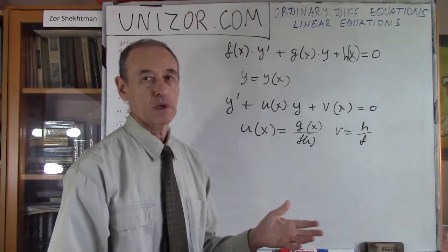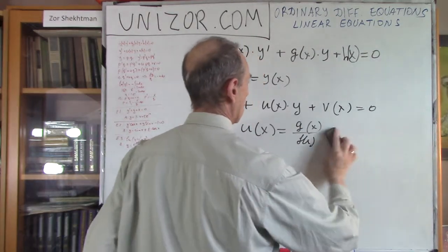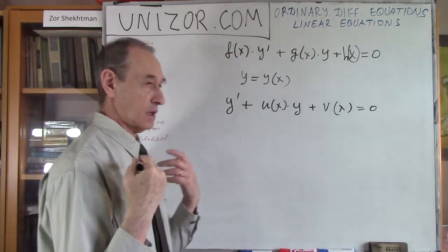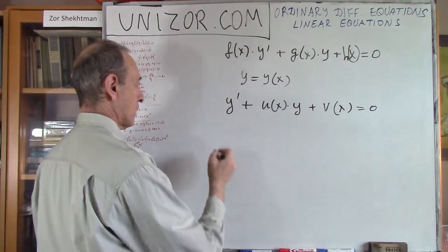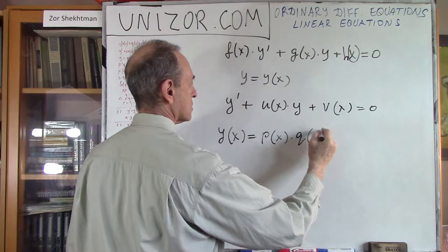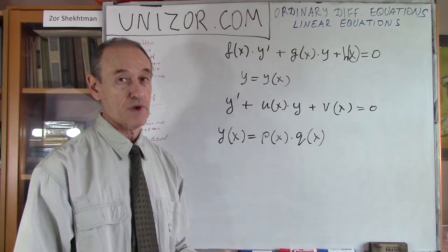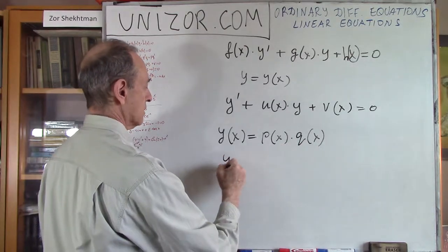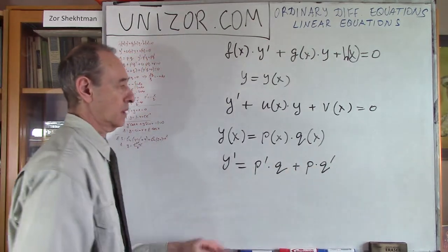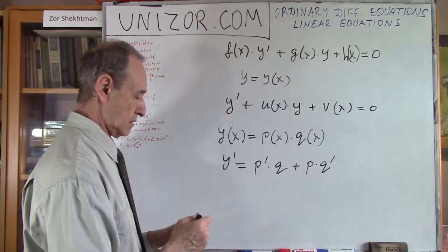So that's a simplification which leads to a little bit simpler representation of our equation. Now, here is the key to the solution: we are trying to find a solution of this particular equation in a specific form as a product of two functions — p and q — and then I will determine each one of these functions. If I represent y as p times q, then the derivative equals derivative of the first times second plus derivative of second times first — that's the product rule.